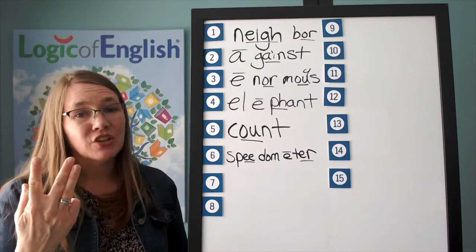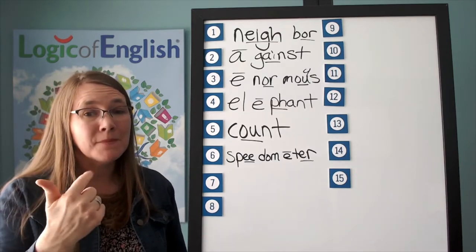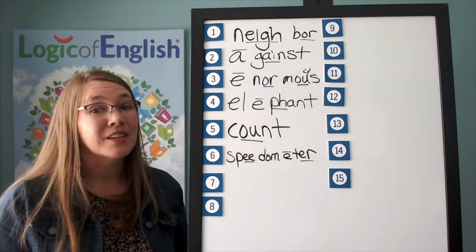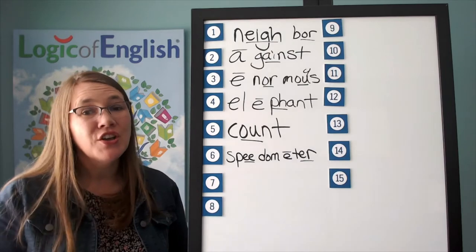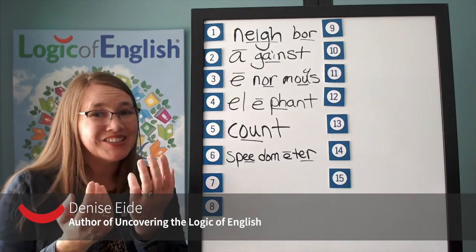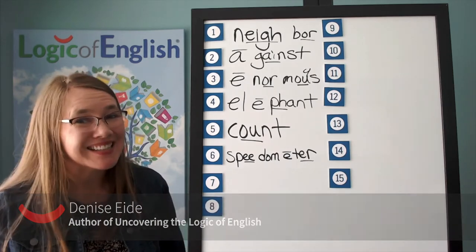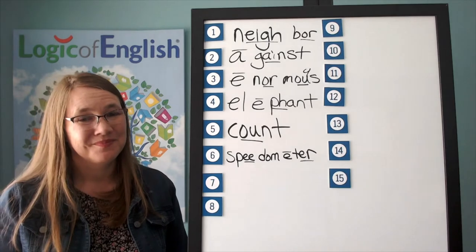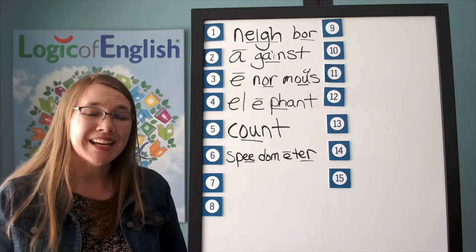Let's sound it out. Thur: TH, ur — use the ur of her. Mom: M, ah, M. E. Tur: T, ur — use the ur of her. Go ahead and write thur-mom-e-tur. Sounding it out — that's the key.